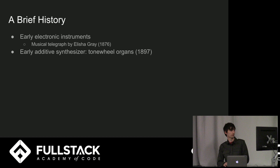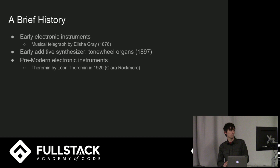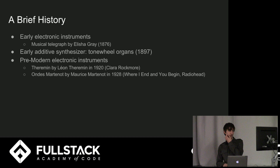They're not electronic but they were definitely in the same ballpark. So 1897 tonal organs, and then pre-modern electronic instruments. Some famous ones would be the theremin by Leon Theremin — Clara Rockmore is a very famous violinist and also thereminist. Also the Ondes Martenot, which is a very cool instrument with a similar concept but it's a keyboard, and Radiohead uses it on a bunch of their tracks.